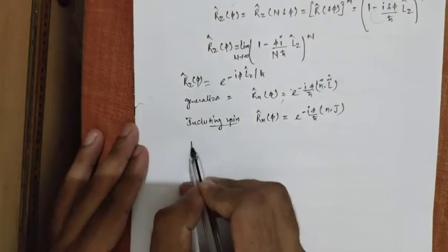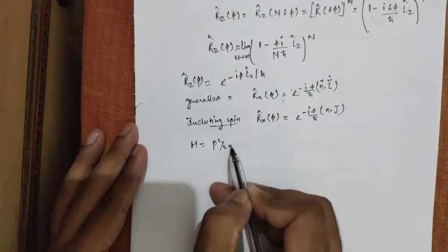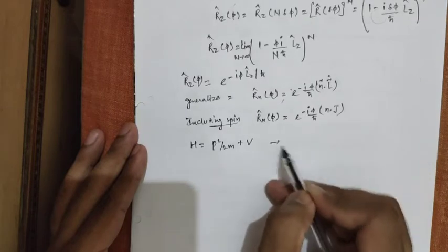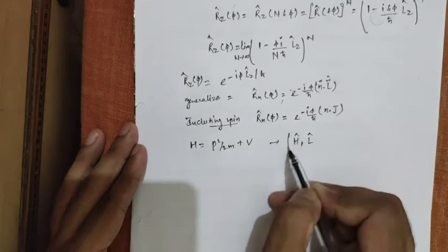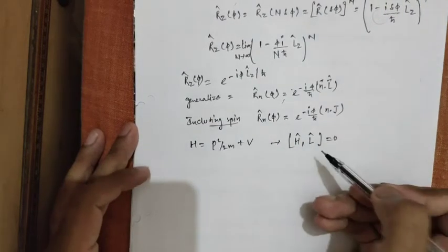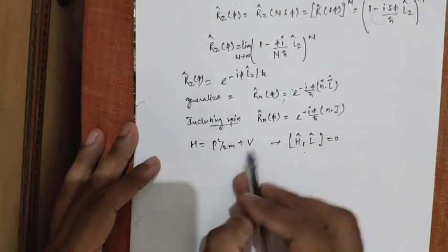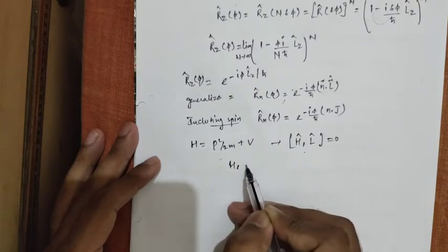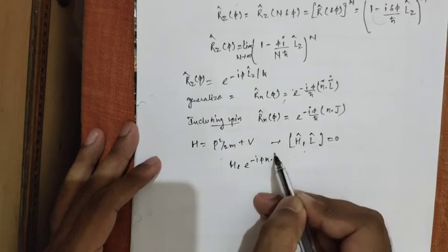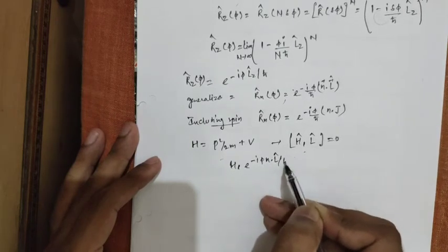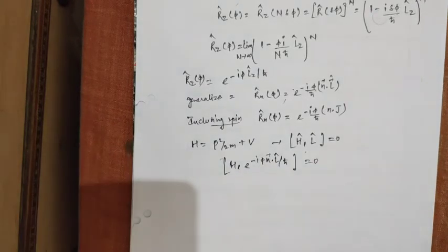We know that Hamiltonian for a particle under a central potential is p squared by 2m plus V commutes with orbital angular momentum. So, this must commute with the rotational operator which is H comma minus i phi n dot L by h bar. So, this must be equals to 0.